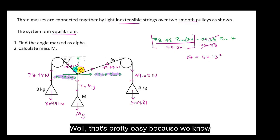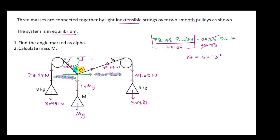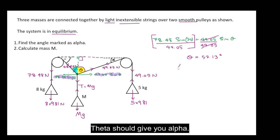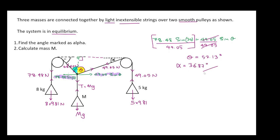Well that's pretty easy because we know this is 90 degrees. If you consider this triangle here, obviously 90 minus theta should give you alpha. So alpha would be 36.87. That is the answer for the first part.